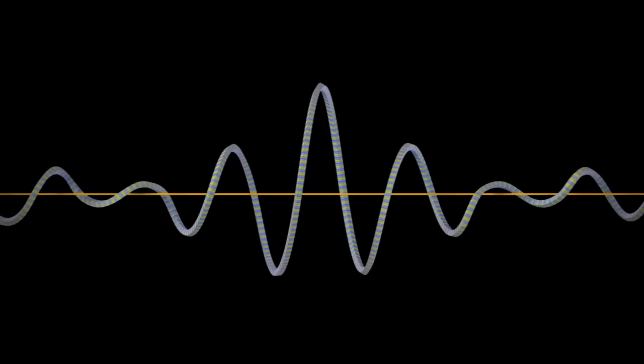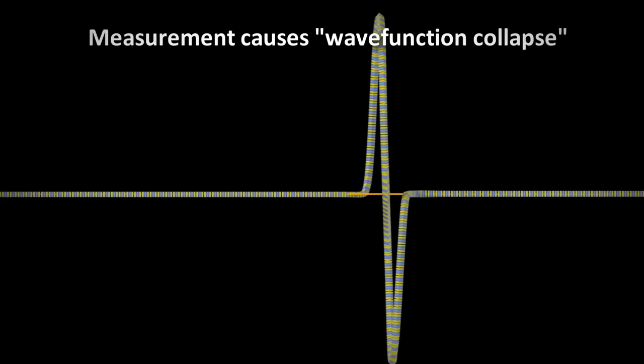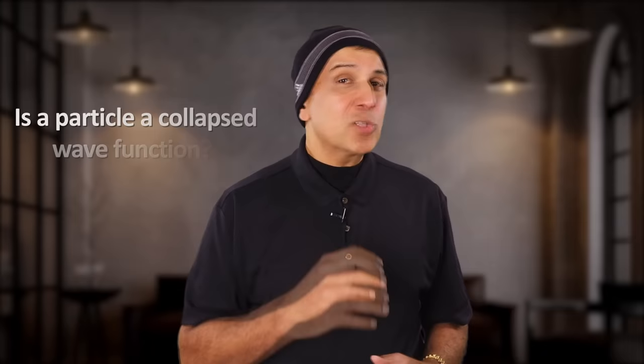So we have something that could best be described as a spread out wave prior to measurement. But after measurement, we get a delta function, which has a spike, like a localized wave. This is something representing more like a particle. So is a particle just a collapsed wave function? Perhaps. But this leaves us with more questions than answers, because we don't really even know what a wave function collapse means.